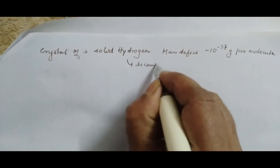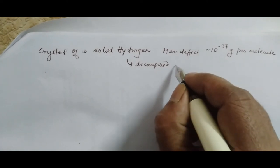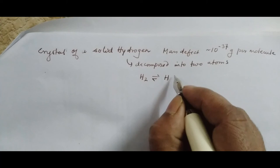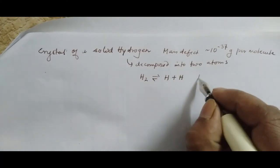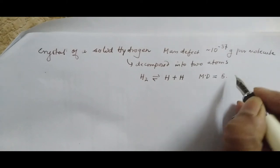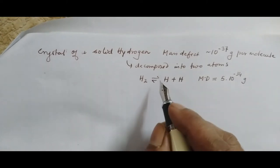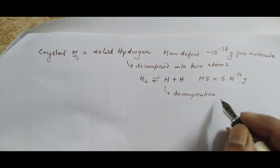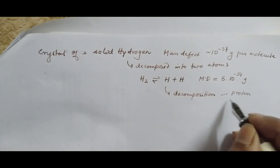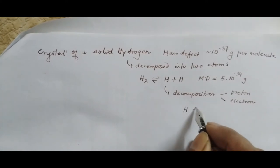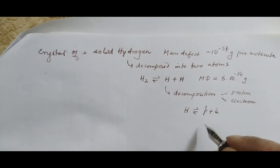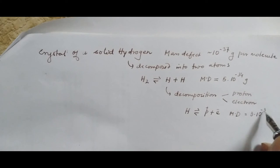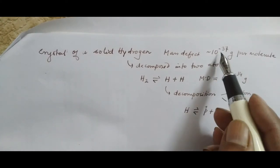When a hydrogen molecule is decomposed into two atoms — H₂ → H + H — the mass defect is about 5×10⁻³⁴ gram. The decomposition of a hydrogen atom into a proton and an electron results in a mass defect of about 3×10⁻³³ gram. This is much bigger than the previous, and that is much bigger than the first.